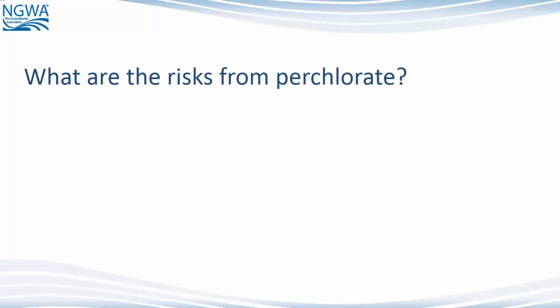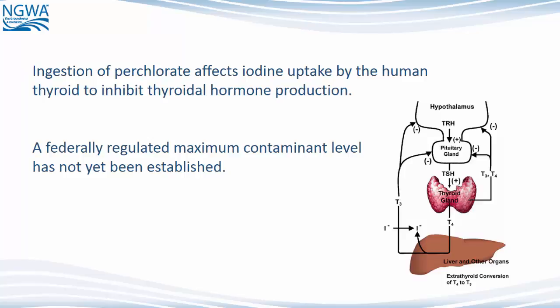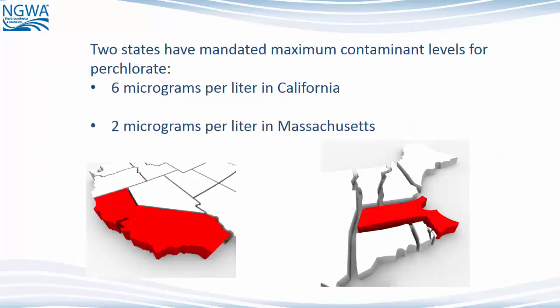What are the risks for perchlorate? Ingestion of perchlorate affects iodine uptake by the human thyroid to inhibit thyroid hormone production. A federally regulated maximum contaminant level has not yet been established. Two states have mandated maximum contaminant levels for perchlorate: 6 micrograms per liter in California and 2 micrograms per liter in Massachusetts.